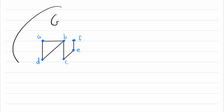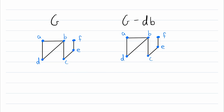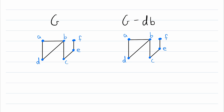Let's say this graph here is called G and we want to look at the graph G minus a certain edge. Let's say we want to get rid of edge DB, so we write that as G minus DB. Very simply, when we remove an edge from a graph we keep the same vertex set and we keep the same edge set, all except for that one edge we delete.